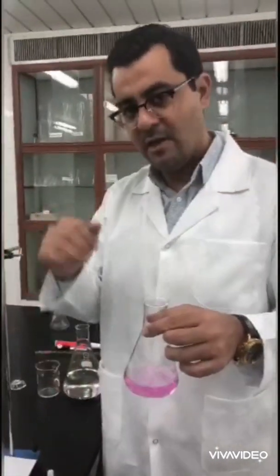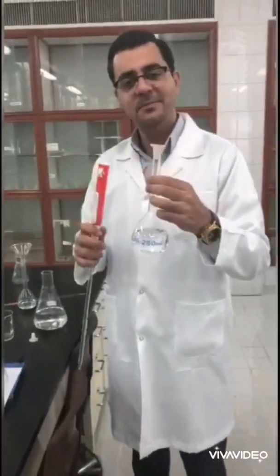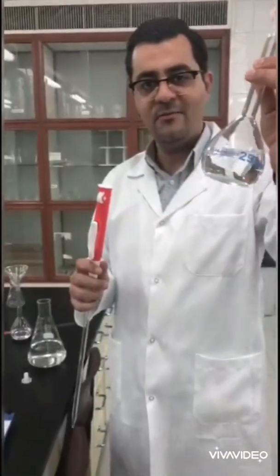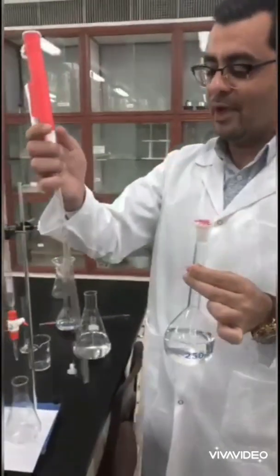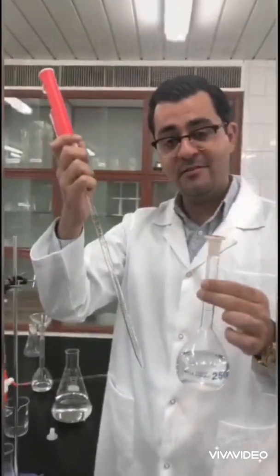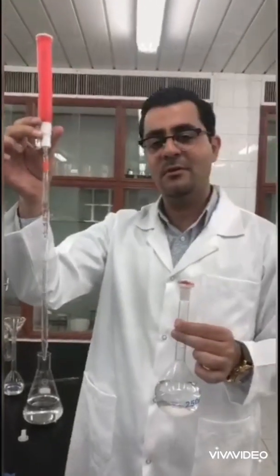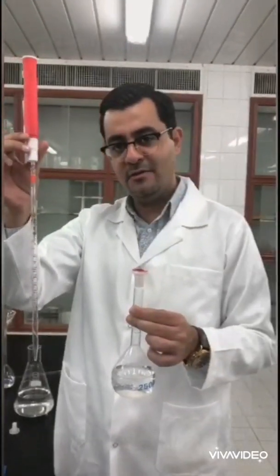Last step: here I have HCl in this volumetric flask. I will take exactly 10 milliliters using this device. This is called the pipette. It's more accurate than a graduated cylinder.